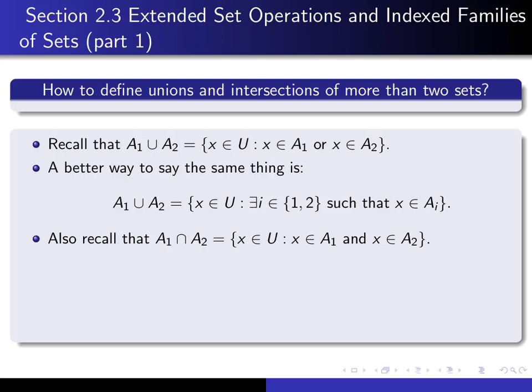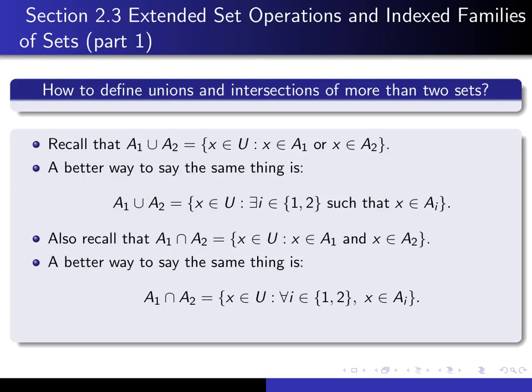Also, recall the definition of A1 intersect A2. It's the set of all X in our universal set such that X is an element of A1 and X is an element of A2. But a better way of saying that is: it's the set of all X in our universal set such that for every index I, either 1 or 2, X is an element of A sub I. Both of these reformulations say exactly the same thing as the originals.